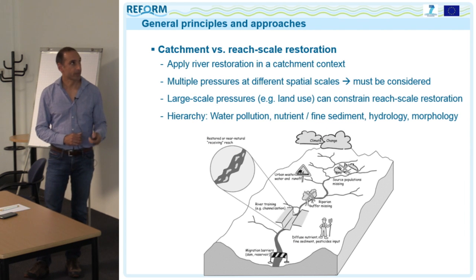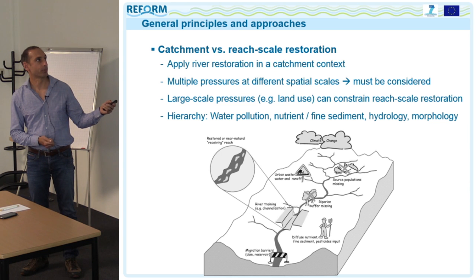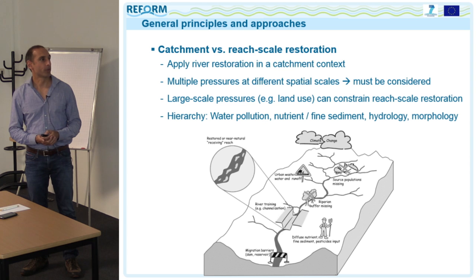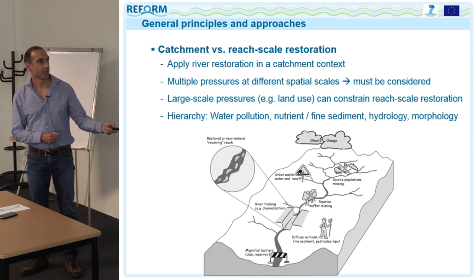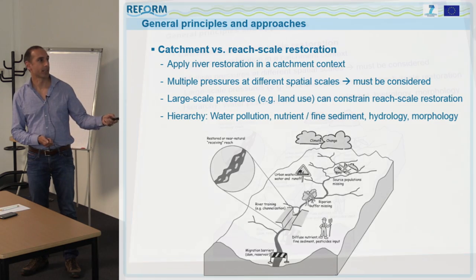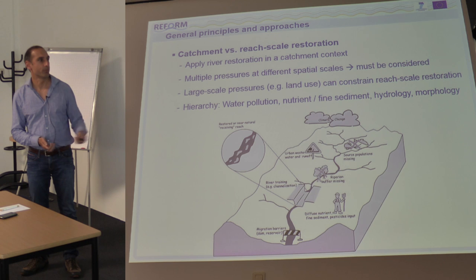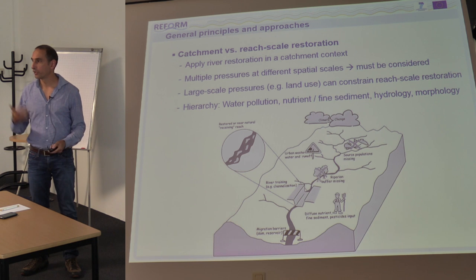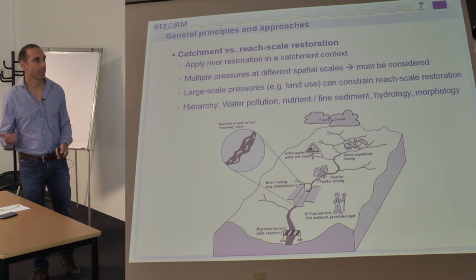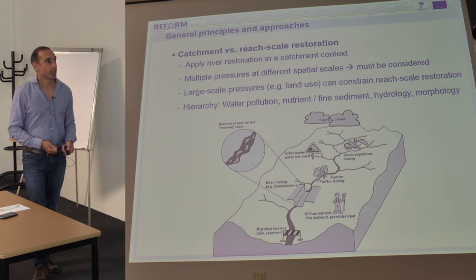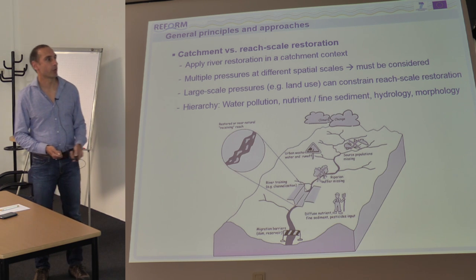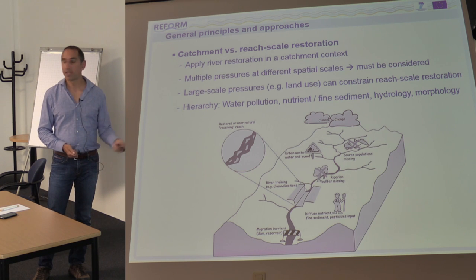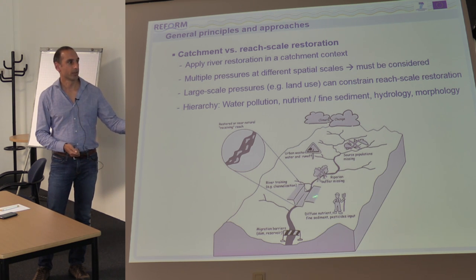The second important principle is to follow a catchment-scale approach rather than a reach-scale approach. The pressures acting on your restored reach operate at different spatial scales, ranging from global climate change to catchment-scale pressures like water pollution and diffuse nutrient and fine sediment input, to river network-scale pressures like missing source populations, missing riparian buffer strips, or migration barriers, down to reach-scale hydromorphological alterations usually addressed by restoration projects.